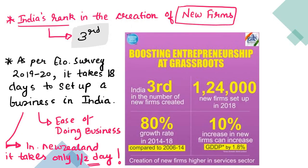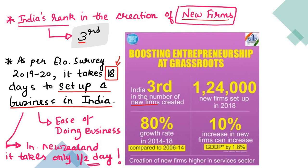India's rank in the creation of new firms — entrepreneurship — is third. Remember the rank. Also, as per Economic Survey 2019-20, it takes 18 days to set up a business in India, whereas in New Zealand it takes only half a day. This shows the ease of doing business situation.